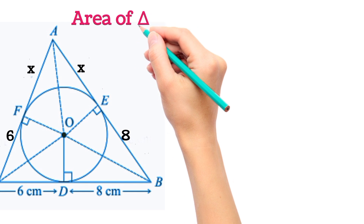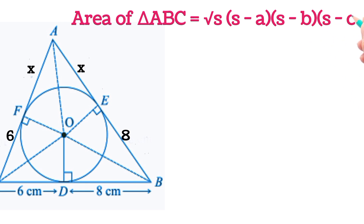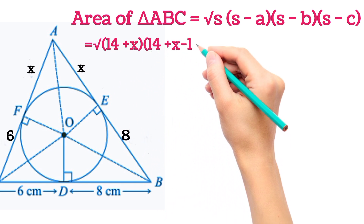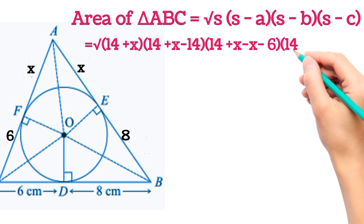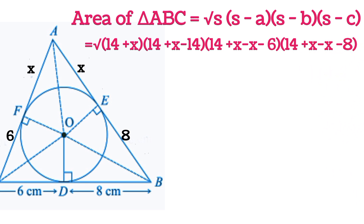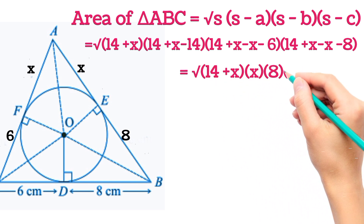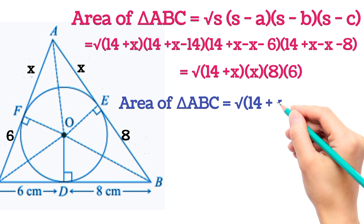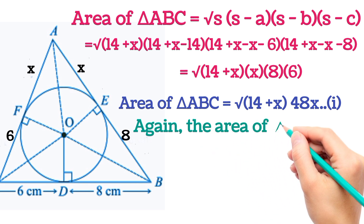The area of triangle ABC using Heron's formula is √(s · (s−a) · (s−b) · (s−c)). Substituting s = 14 + x, we get √((14+x) · (14+x−14) · (14+x−x−6) · (14+x−x−8)) = √((14+x) · x · 8 · 6). So the area of triangle ABC = √(48x(14+x)). This is equation 1.